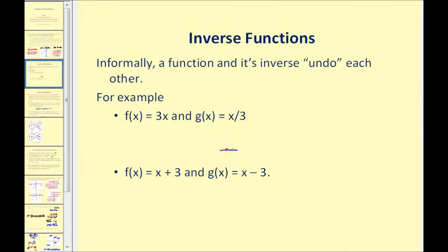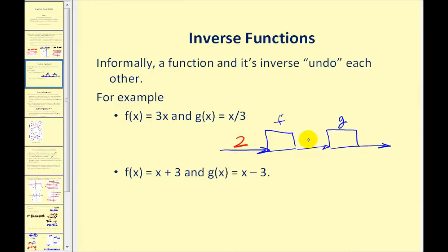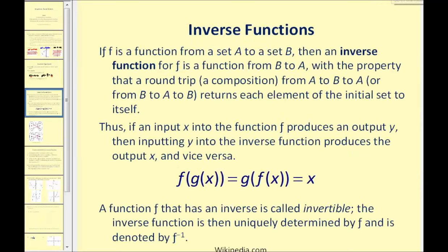You can think of this as a conveyor belt where we put an input in. When this input goes into f, the output would be three times x, or three times two, which equals six. Now if this output becomes the input into g and g divides by three, six divided by three gives an output of two. These two functions undo each other because what we start with is the same thing we end up with. Another example: f of x equals x plus three and g of x equals x minus three. Plus three and minus three are opposite operations, so these two functions undo each other and are inverses of one another.